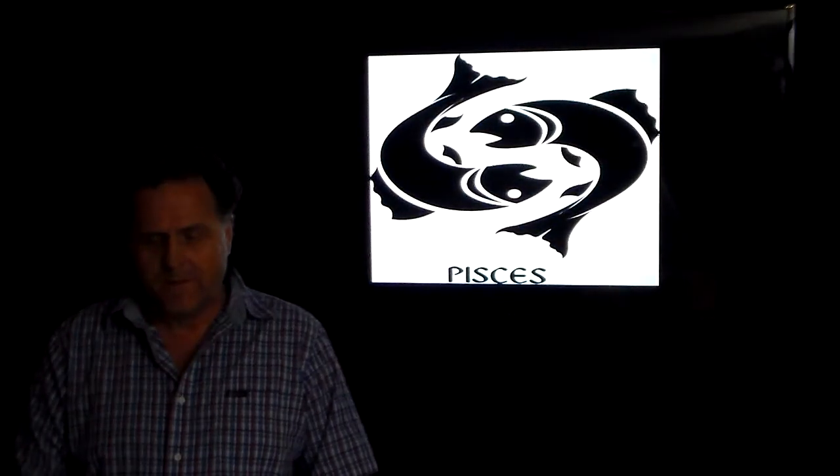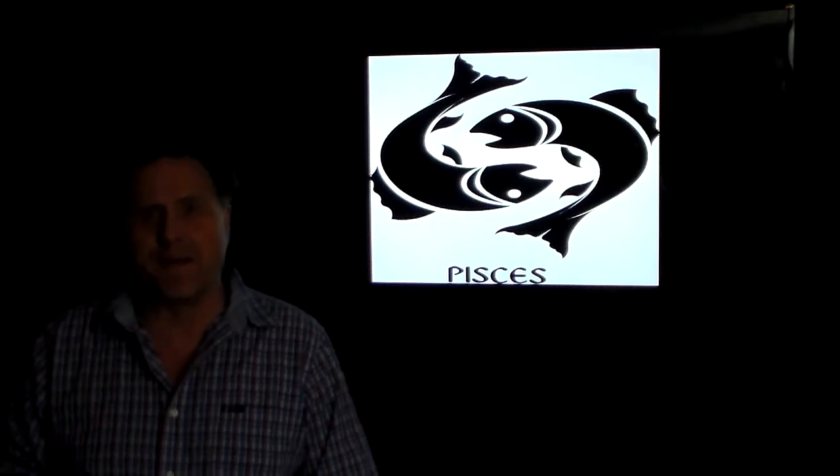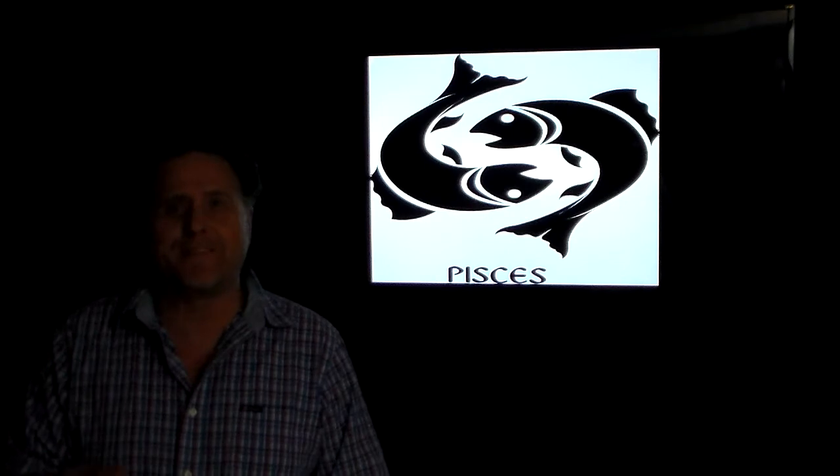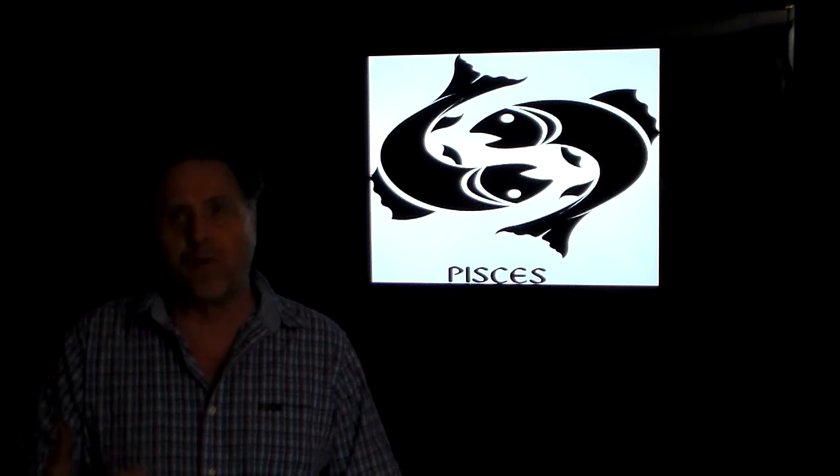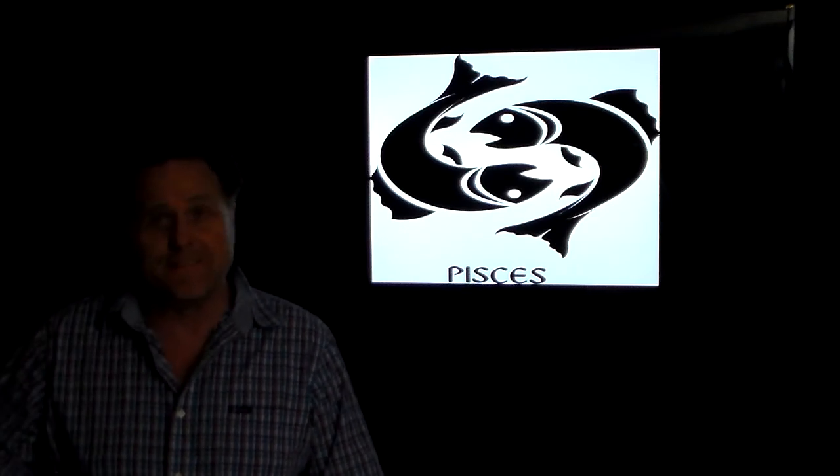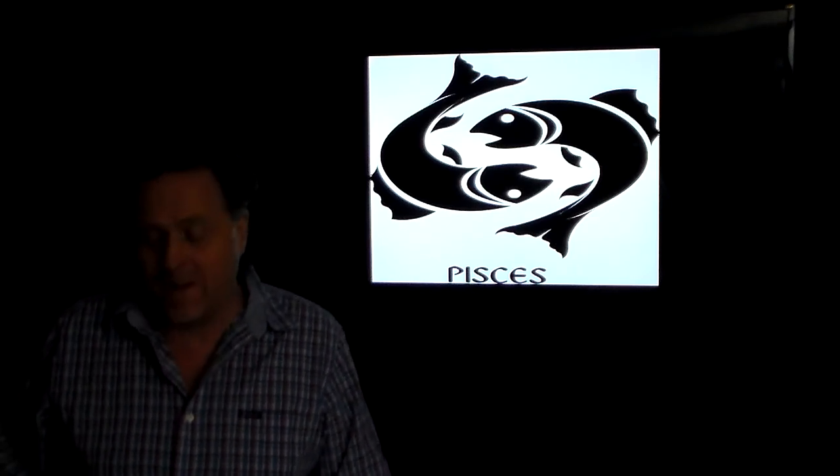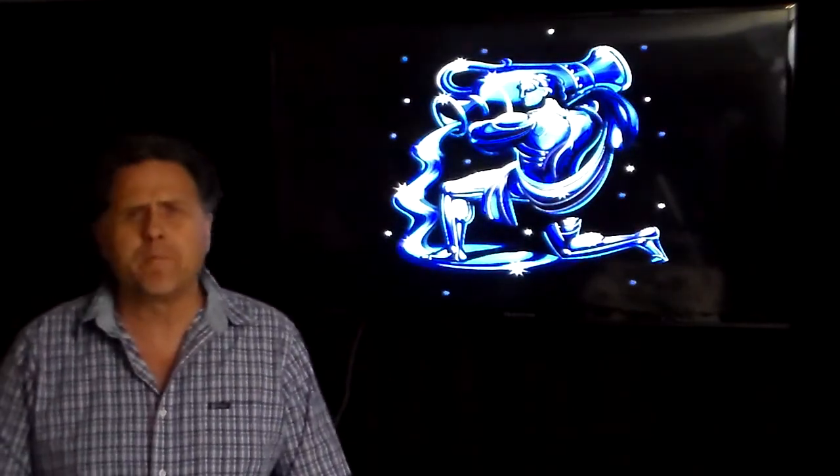We're in Pisces right now. Ironically, it's made of fish. I mean, the people that put these things together, this isn't just airy-fairy stuff. These symbols actually relate to the environment that we're in right now. We're in the big flood. And then we're getting out of it, and we're going into Aquarius. Again, another water sign. The guy pouring the big jug. So hopefully we can wrap it up here.